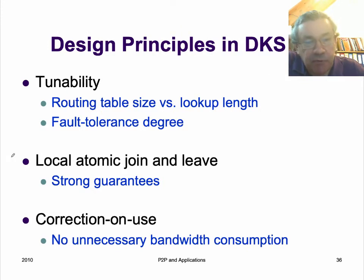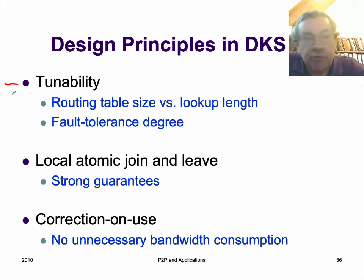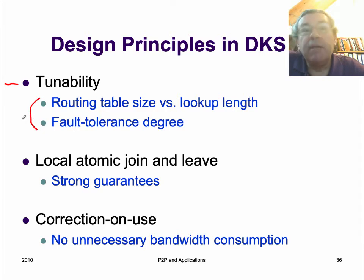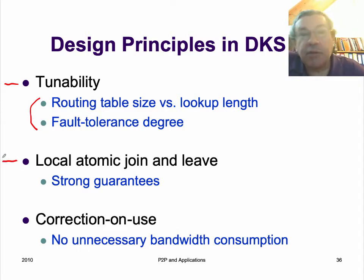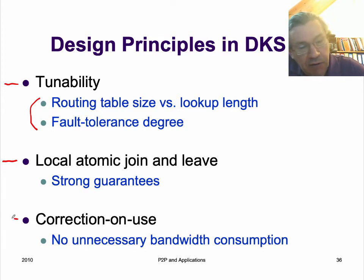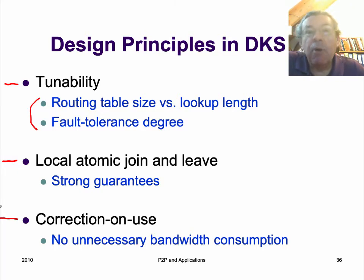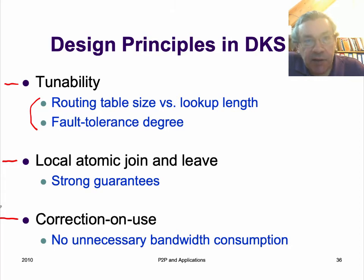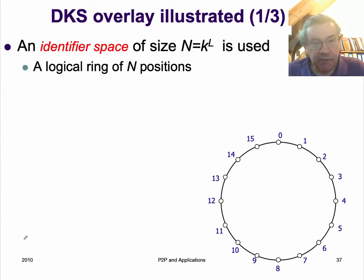The design principles of DKS: first, it's tunable — we can choose the routing table size versus the lookup length and also the degree of fault tolerance for the replication. Second, it has strong guarantees for nodes joining and leaving via local atomic join and leave. Third, it uses messages from normal operation to fix errors in the routing table — this is called correction on use, an efficient way of fixing the routing tables.